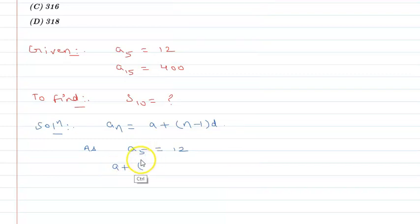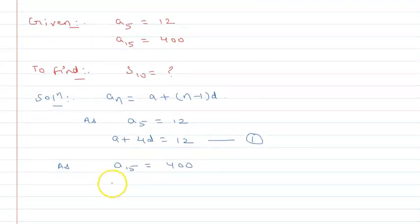5 minus 1 that is 4d equal to 12, equation 1. A15 is given as 400. A15 is a plus 15 minus 1, 14d equal to 400.